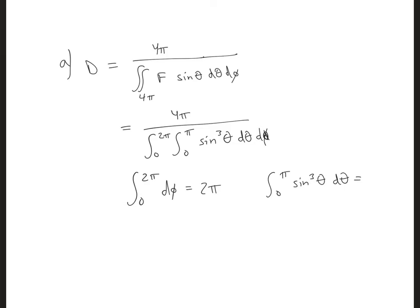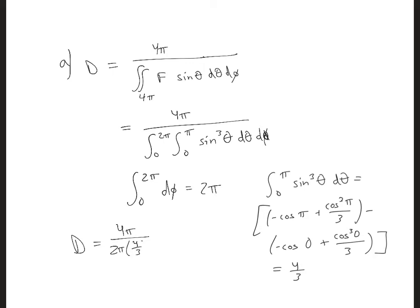So if we plug in, minus cosine π plus cosine cubed π over 3 minus cosine of 0 plus cosine cubed of 0 over 3. And then if we simplify this, we are going to get 4 thirds. So then for the directivity, we're going to have 4π over 2π and 4 thirds, which gives us 1.5.